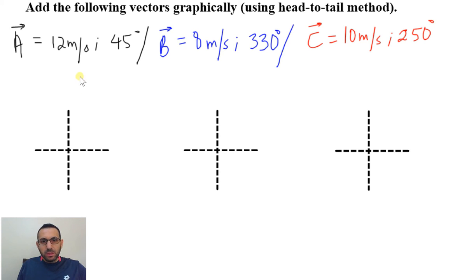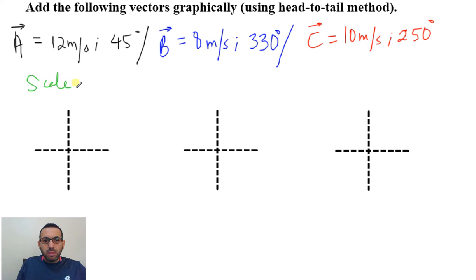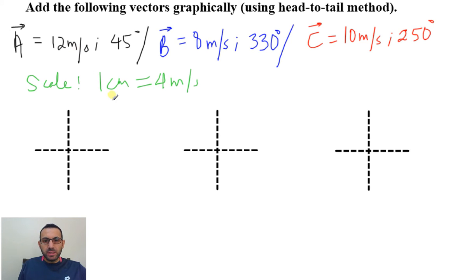The first thing to do in such questions is to define a scale. As you know, we cannot draw 12 meters per second — what we can draw is length in centimeters, especially when drawing on a piece of paper. The scale has to be convenient. With 12, 8, and 10, the best scale here is 1 centimeter representing 4 meters per second. So 12 m/s = 3 cm, 8 m/s = 2 cm, and 10 m/s = 2.5 cm.